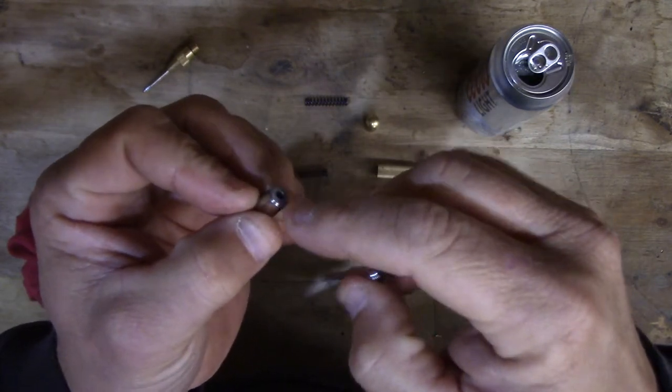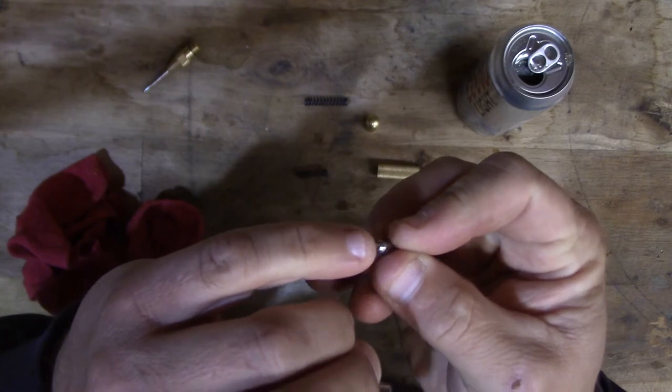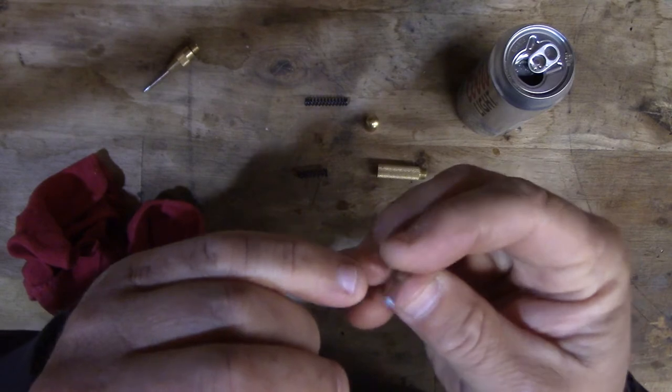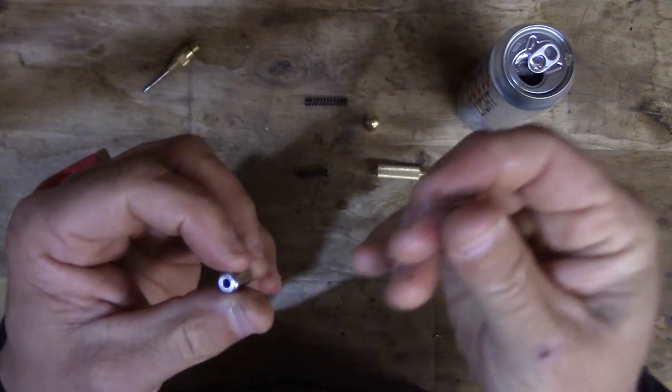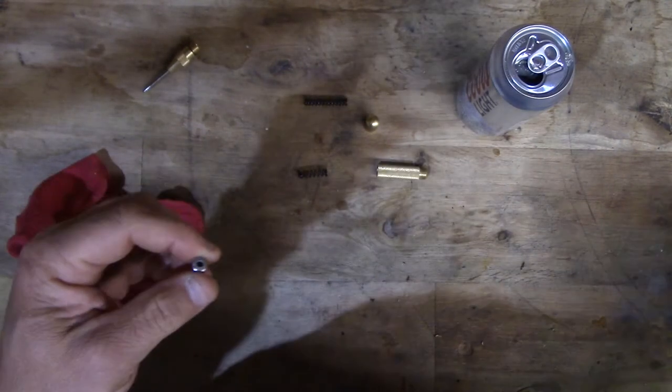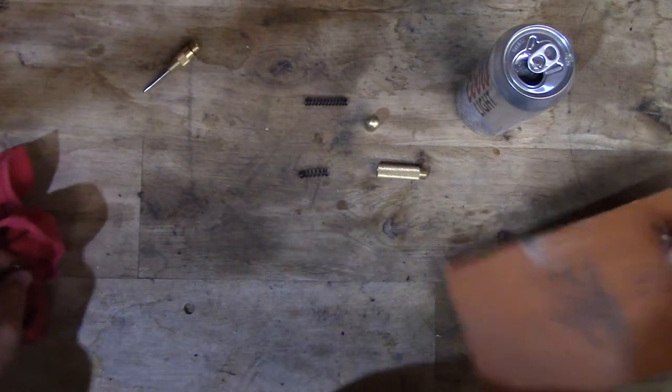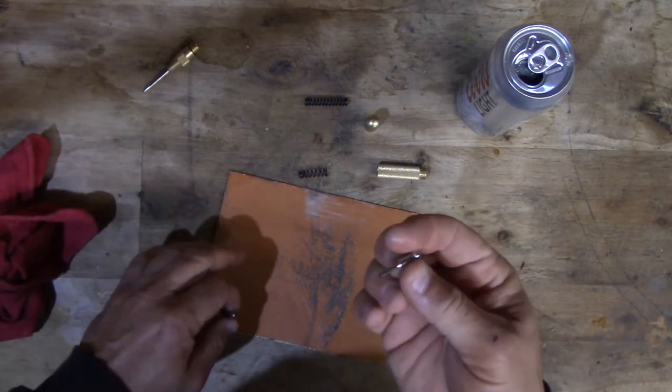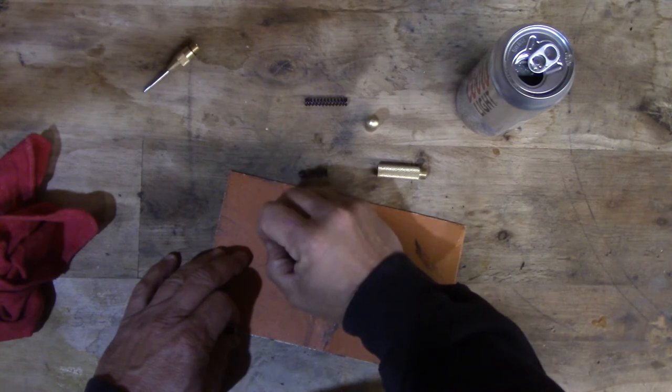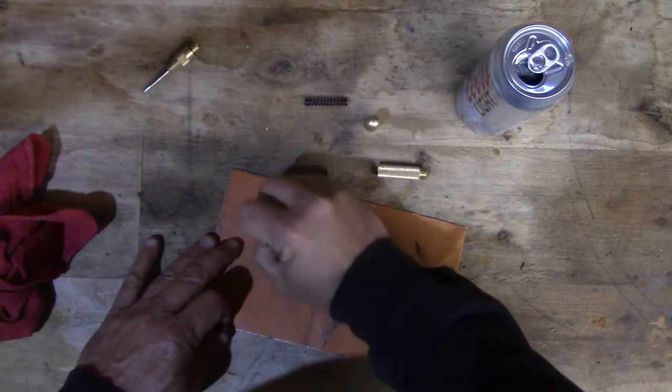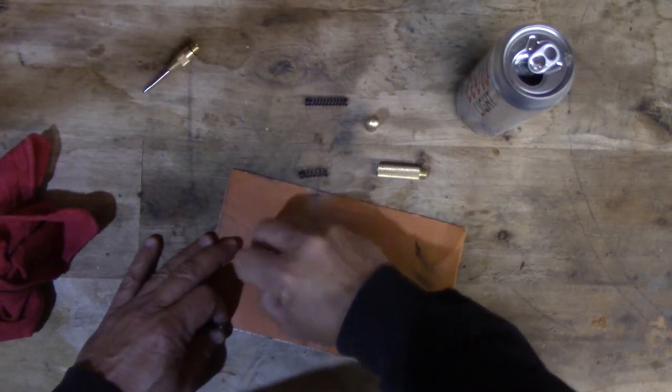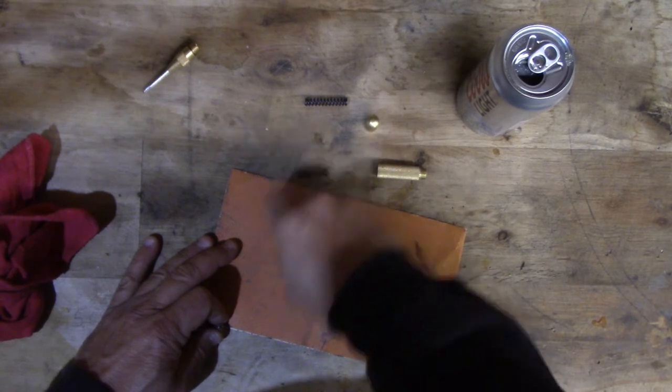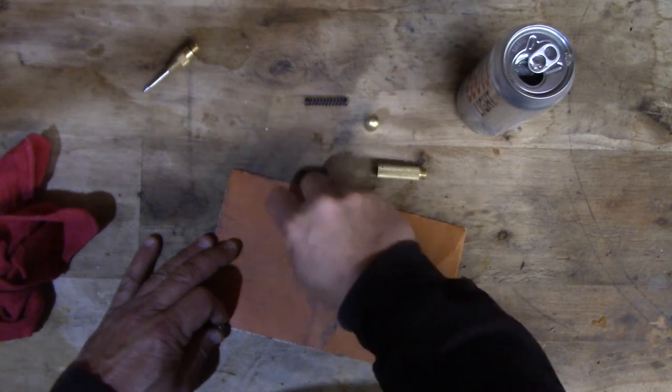They didn't clean them up at all. So all you have to do is take a little piece of sandpaper - this is some 220 I just had laying around - and just take the end of it, just this tip, and smooth it out a little bit and knock off the rough edges. Doesn't take much.